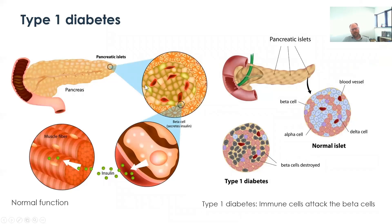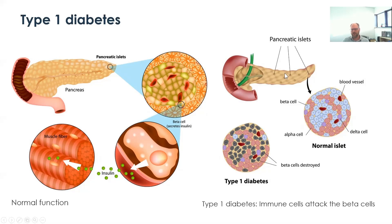In type 1 diabetes, the insulin-producing cells live in the islets of Langerhans, and it is the uptake of glucose into those cells that triggers insulin secretion to bring up glucose in the muscle fibers. In type 1 diabetics, the immune system starts attacking the beta cells. Normally you'd have a distribution of alpha, beta, and delta cells, but in a type 1 diabetic the body destroys those beta cells, leaving only alpha and delta cells.